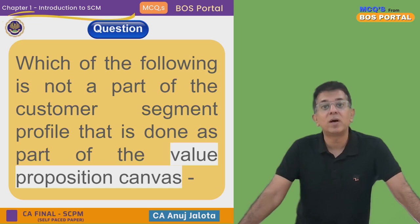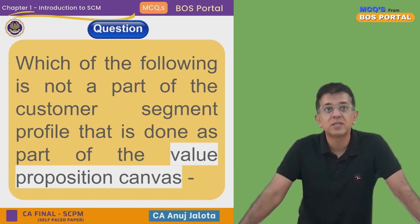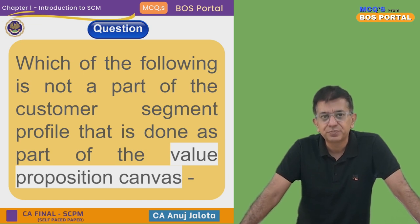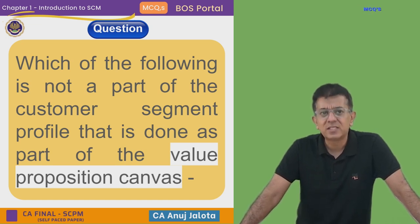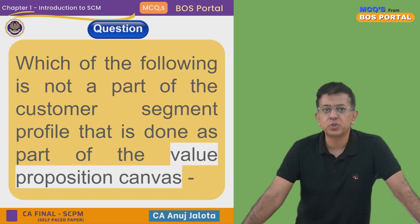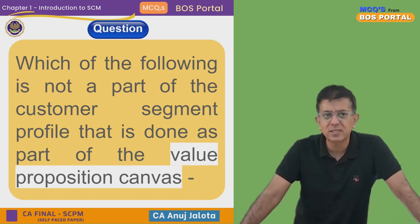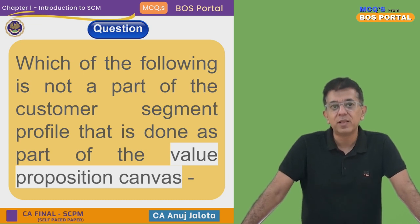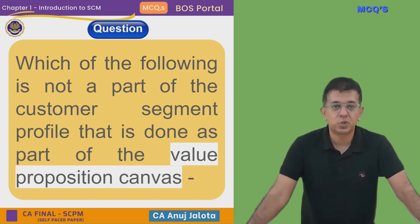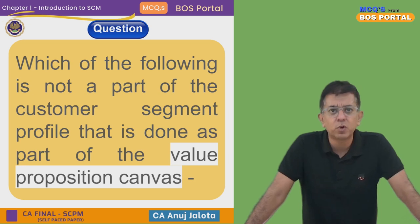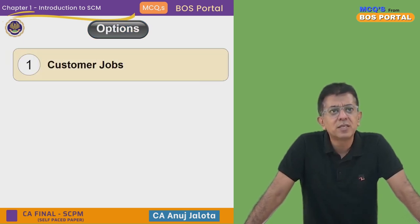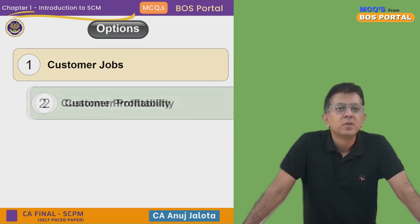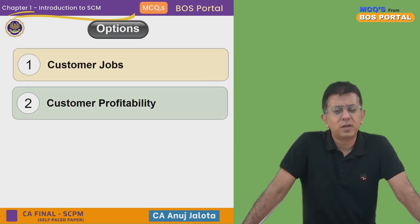We are on Chapter 1. Our question for today is: which of the following is not part of the customer segment profile as part of the Value Proposition Canvas? The four options are: first, customer jobs; second, customer profitability; third, customer pains; and fourth, customer gains.